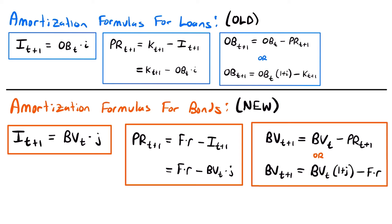Finally, for the book value: previously we calculated the outstanding balance at T plus 1 by taking the previous outstanding balance and subtracting the principal at that time. There was also a formula where you take the previous outstanding balance, accumulate interest for one period by multiplying by 1 plus i, then subtract the payment. For bonds, the book value at T plus 1 is found by taking the previous book value and subtracting the principal at T plus 1, or alternatively by accumulating the previous book value at yield rate J and then subtracting the coupon F times R.